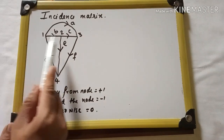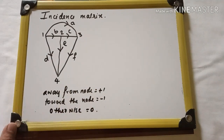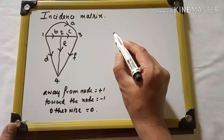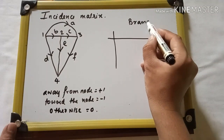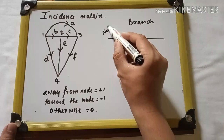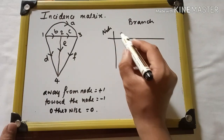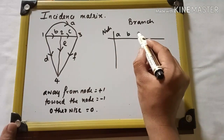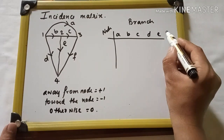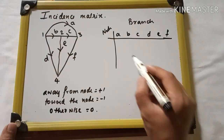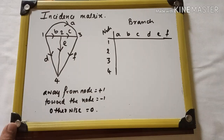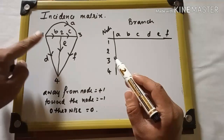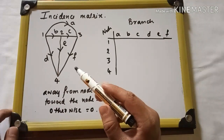There are four nodes. First we will write the branches: a, b, c, d, e, and f, and the nodes: one, two, three, and four. We set up the matrix with branches as columns and nodes as rows.